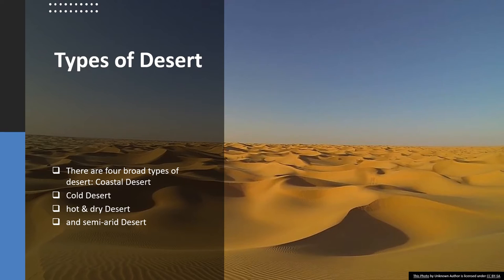Cold deserts refer to very cold and harsh places. You will be amazed to know that even Antarctica is called a desert — it is the coldest, windiest, and most extreme desert found on earth. There is also the term semi-arid deserts. These kinds of deserts receive some rainfall, maybe 25 centimeters or below. Because of the presence of rainfall, biotic life prevails there after undergoing many adaptations and challenges.